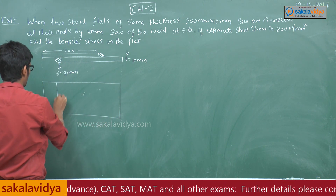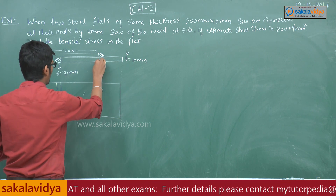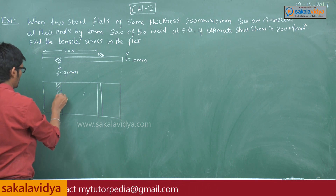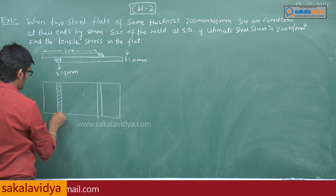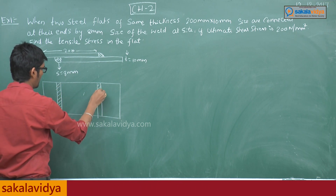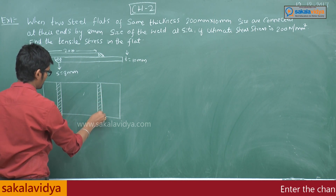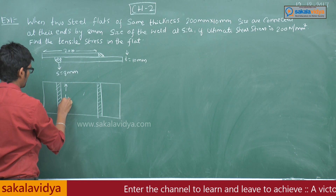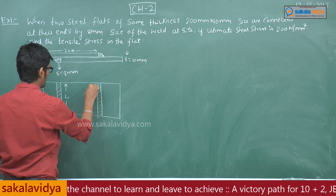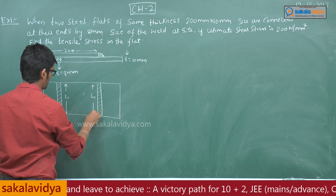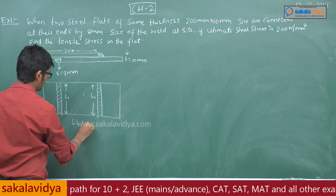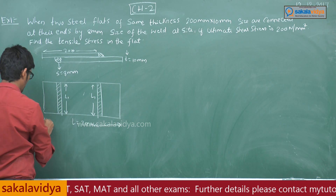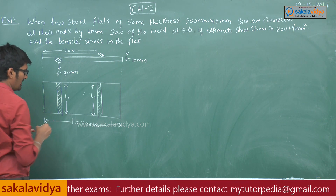Let us sketch the diagram. The welding is done on both sides with a size of 8mm. This length is L1 and this is also L, with the length being 200mm on both sides.